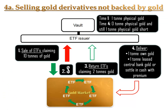When the issuer of ETFs issues ten times as much paper claims to gold as he has physical gold in his vaults, a problem occurs when rumors hit the market that the issuer of the claims to gold doesn't actually have the gold claimed. By supplying claims to gold to the market that people perceive to be as good as physical gold itself, an artificial extra supply of gold is created which will depress the price of gold. This practice of creating a phantom gold supply serves the central banks and is probably the best way to suppress the price of gold currently available.